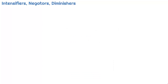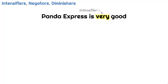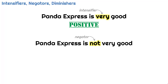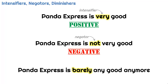An opinion word can be preceded by an intensifier, like 'very,' 'extremely,' or 'terribly,' which does not change the sentiment's polarity. 'Panda Express is very good.' The intensifier doesn't change the positive word 'good' — it just makes it more positive. However, a negator does change the polarity of sentiment. 'Panda Express is not very good.' Here we have changed the 'very good' sentiment to a negative by using the negator 'not.' And a diminisher, like 'slightly,' 'somewhat,' or 'barely,' decreases the intensity or can even change the polarity. 'Panda Express is barely any good anymore.' If I was the owner of a Panda Express, I would take this to be a negative statement.